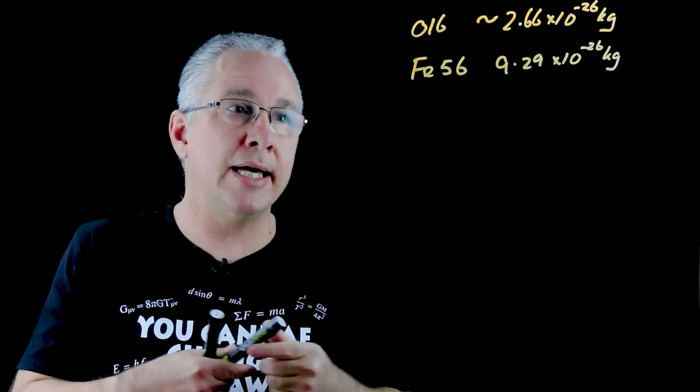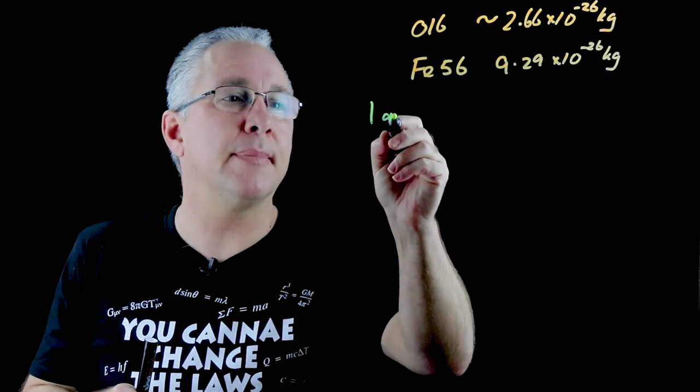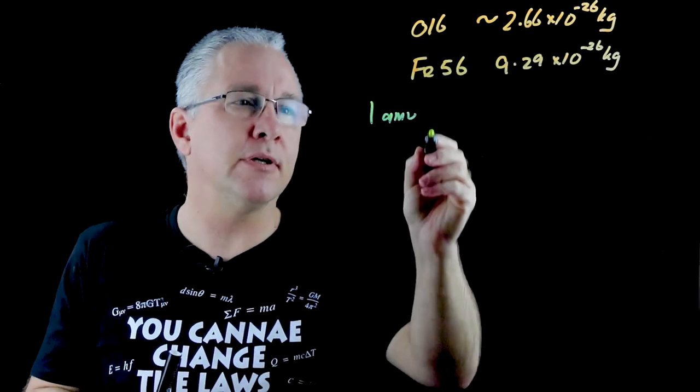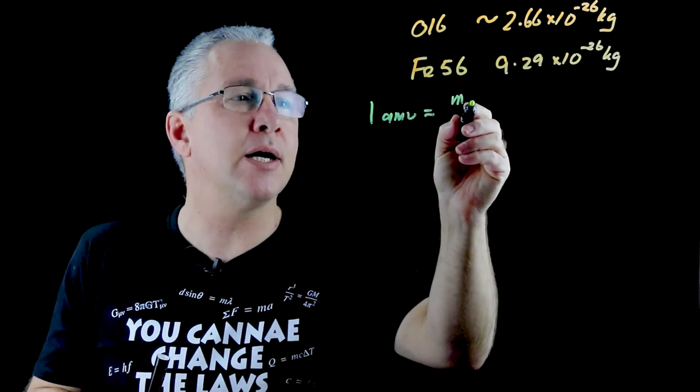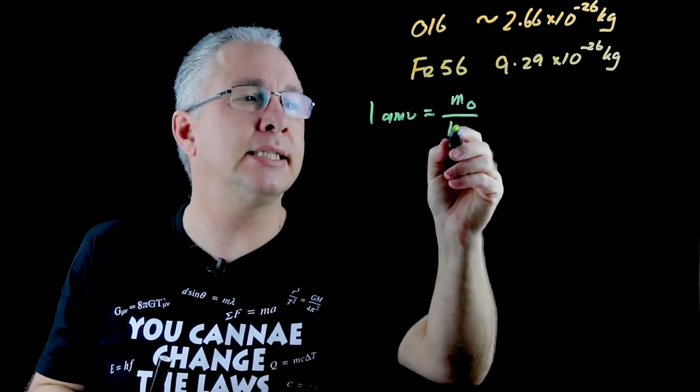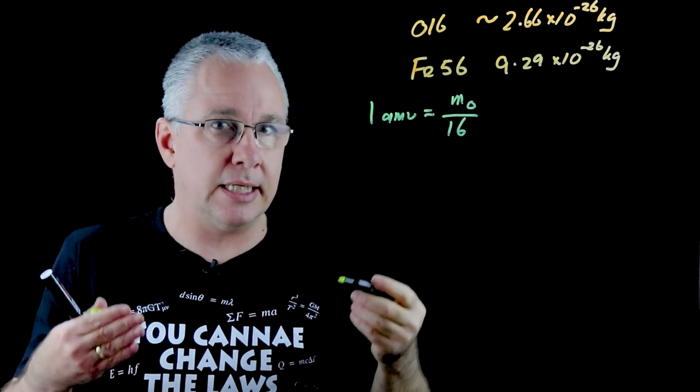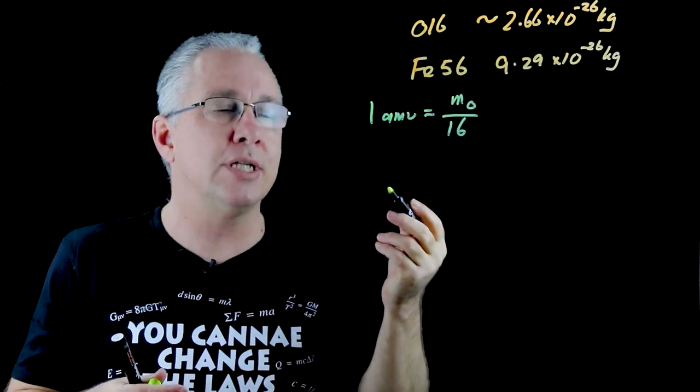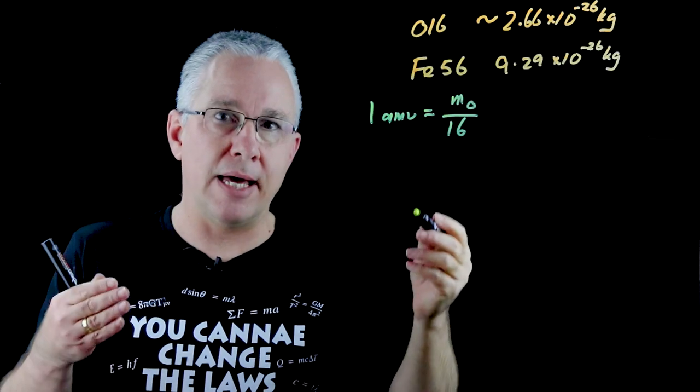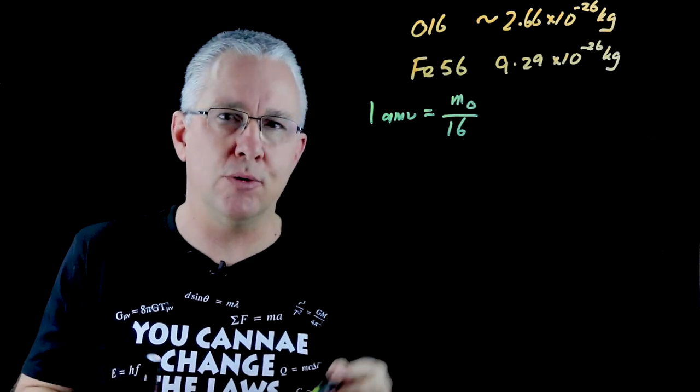it was decided that the AMU, the one atomic mass unit, was going to be equivalent basically to the mass of my oxygen divided by 16. Now why 16? Because 16 is the number of neutrons that oxygen has. So as a result you can determine a value for one AMU.